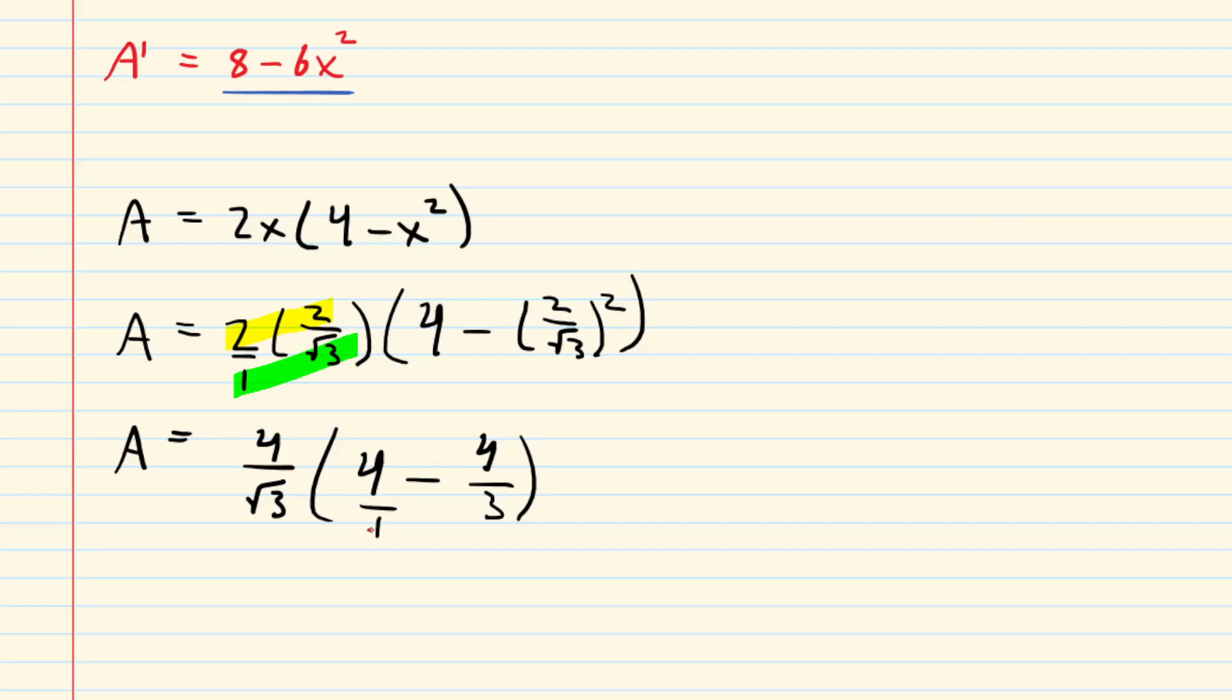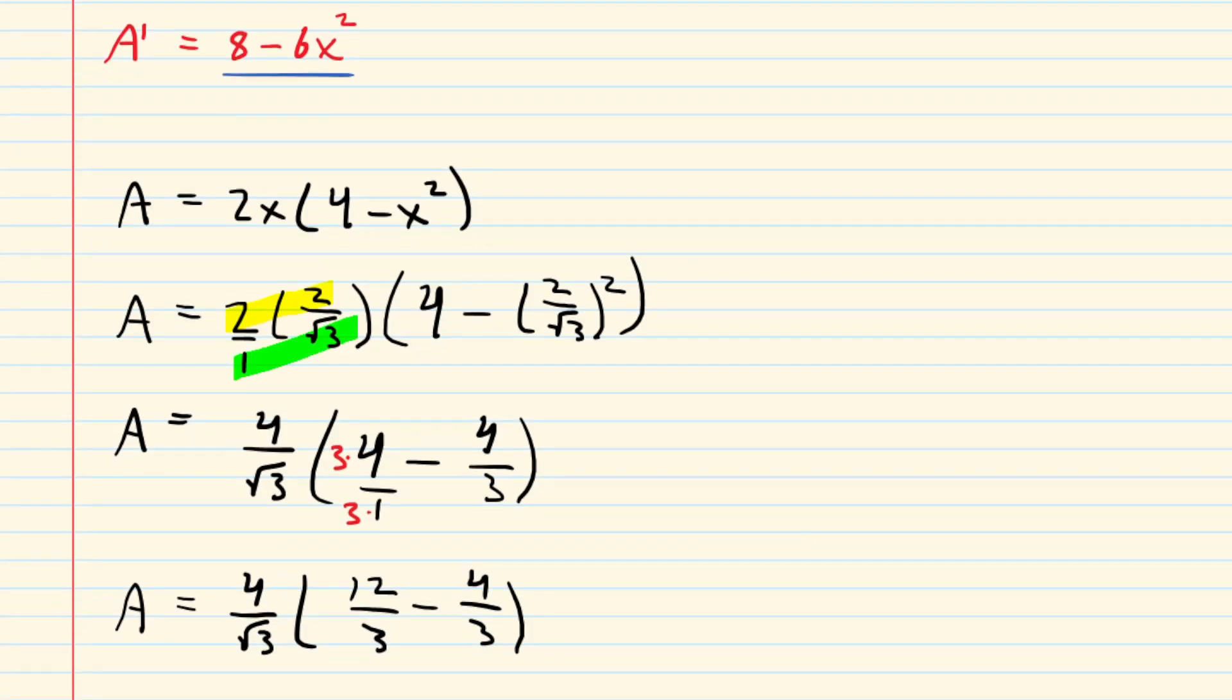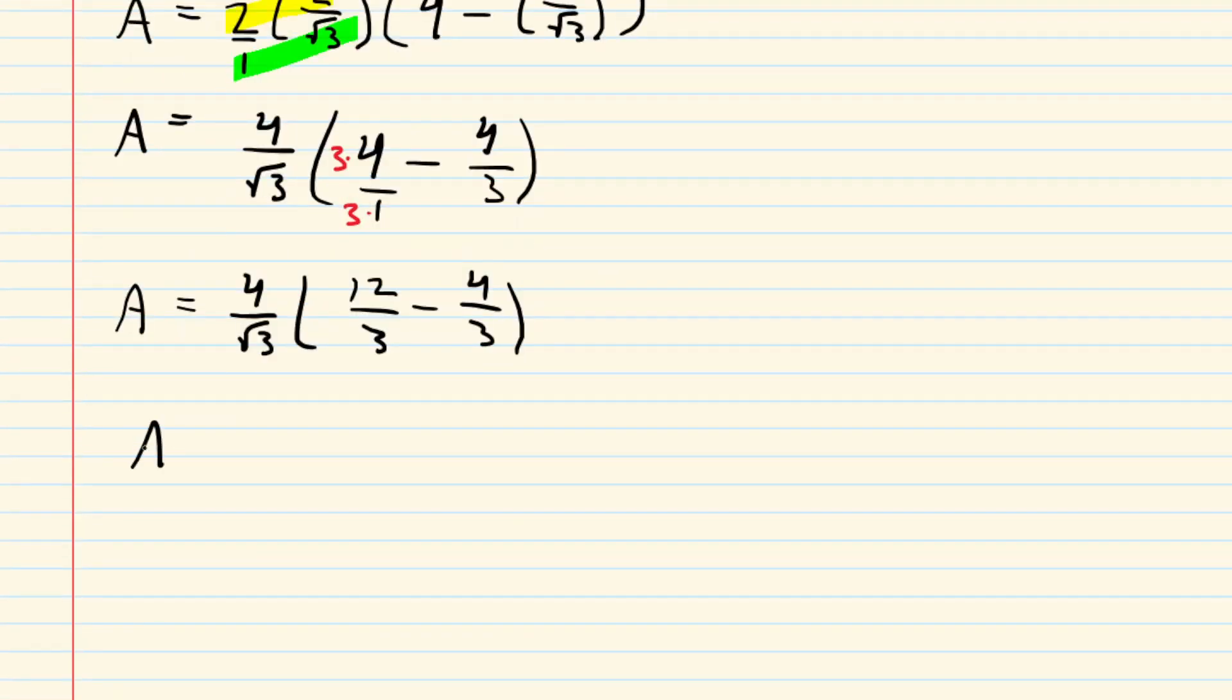Now we need to find a common denominator in here. We'll put that 4 over 1, we'll multiply that denominator by 3 and this numerator by 3. Once we have the common denominator, we'll go ahead and subtract inside the parentheses. So we're going to end up with 8 over 3.